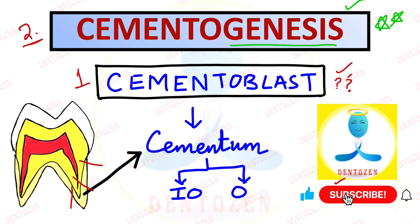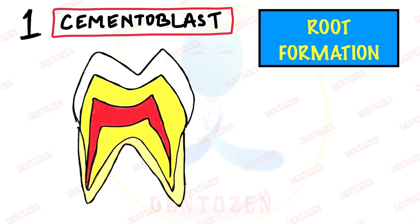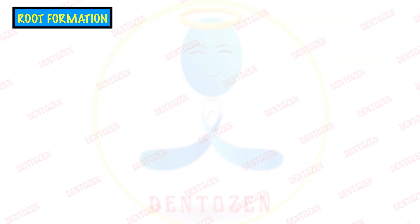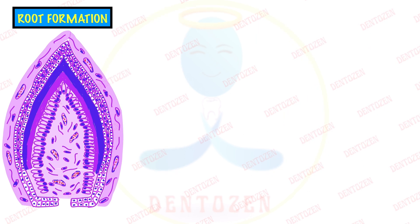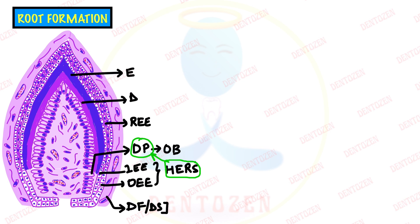The cementoblast appears during root formation, which happens in the advanced bell stage of tooth development. Root formation begins once the crown is complete — that is, enamel and dentine have formed. The reduced enamel epithelium's inner and outer layers form Hertwig's epithelial root sheath (HERS). Outside this sheath we have the dental follicle; inside we have the dental papilla, which forms odontoblasts that form root dentine. Under the influence of HERS, dental papilla cells transform into odontoblasts and form root dentine.